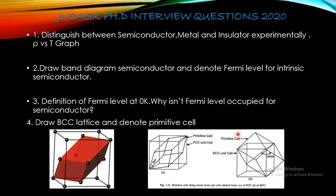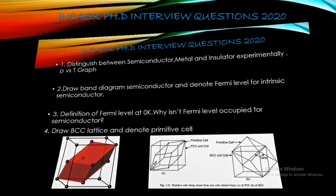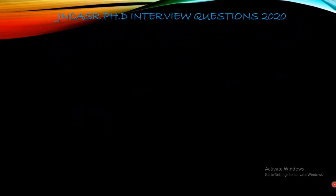Keep in mind that the primitive cell is where the number of atoms per unit cell must be 1. Keeping that information in mind, you need to identify that cell. It is better to prepare this kind of question for basic solid-state physics interviews.